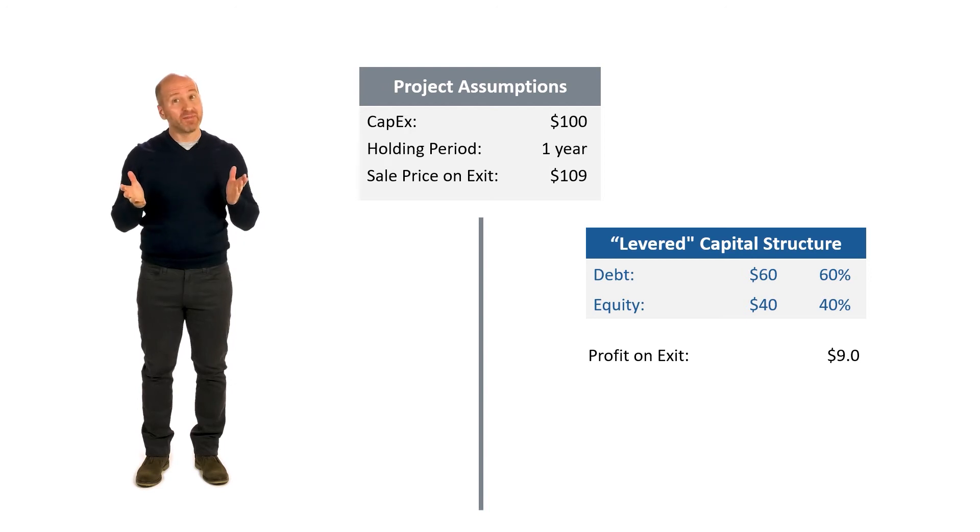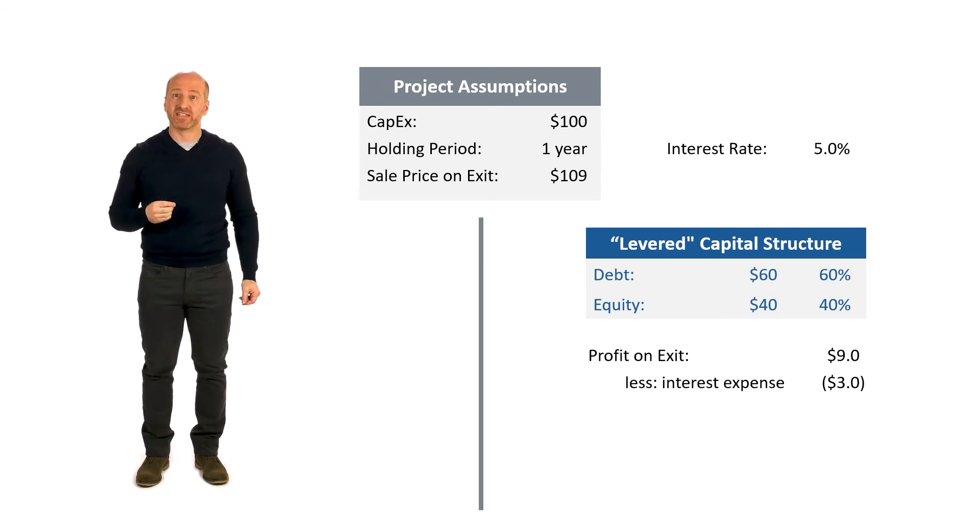But at this point, you've got to remember we borrowed money. Let's say that the interest rate on that $60 was a 5% interest rate, meaning over the course of the year, we have $3 in interest expense that needs to be repaid.